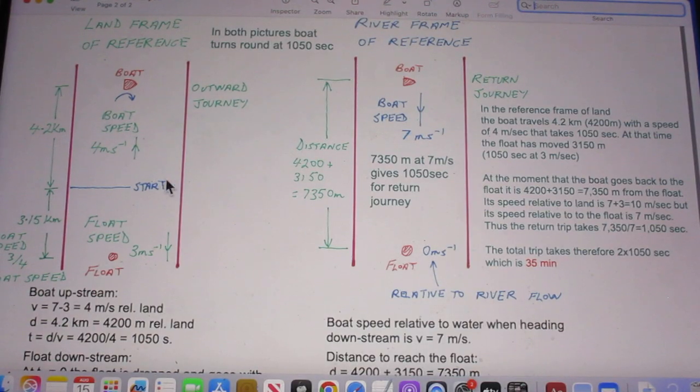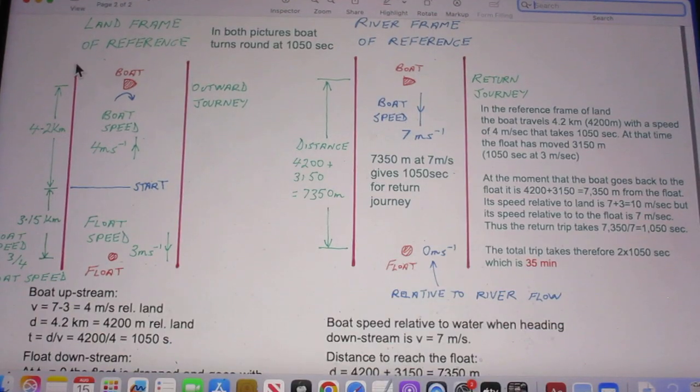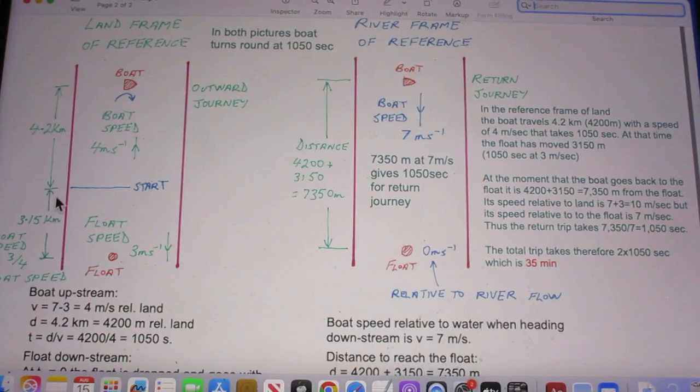You can see that here. The boat moves 4.2 kilometers, but because the water runs 3 meters per second in this direction, the float has moved 3.15 kilometers. At the moment that the boat goes back to the float, it is 4,200 plus 3,150 meters from the float.